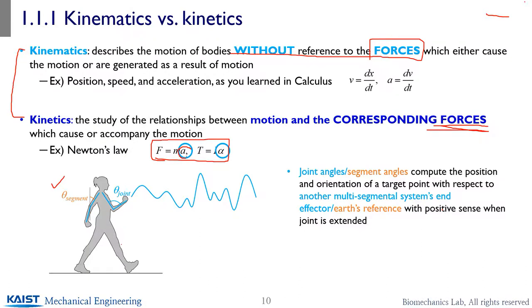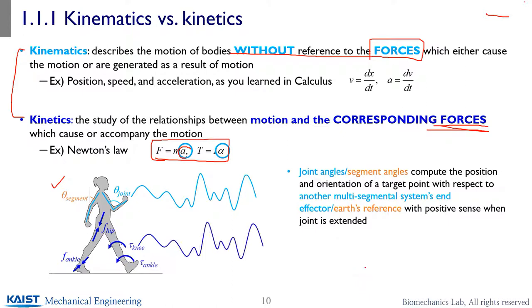But for interpretation purposes, the joint angle is more intuitive. Kinetics is about how your joint forces — like hip joint force or ankle joint force — are applied, and how those muscle forces generate torques like knee joint torque and ankle joint torque to generate that motion. Note that kinetics handles forces, as opposed to kinematics which doesn't include forces.